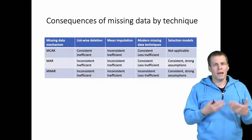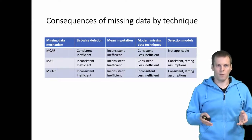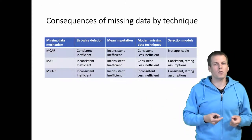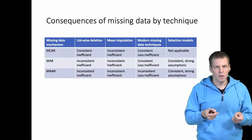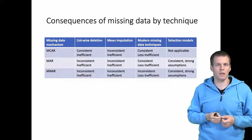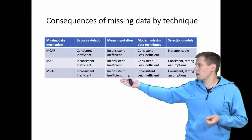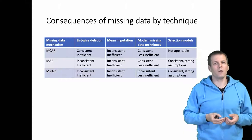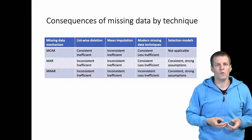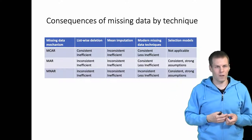When data are missing at random — where the missingness depends on some observed variables but not the missing variable itself — listwise deletion is going to be inconsistent and inefficient. Fortunately, modern missing data techniques are still consistent under this scenario and are less inefficient than listwise deletion. Having the full data would of course be most efficient, but modern missing data techniques are the best available option.